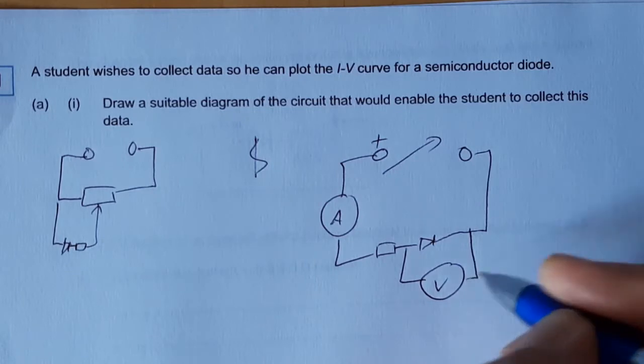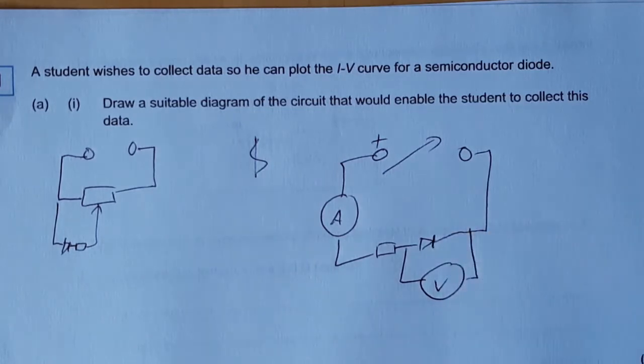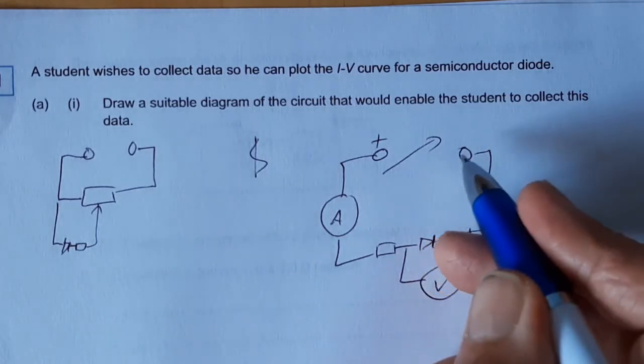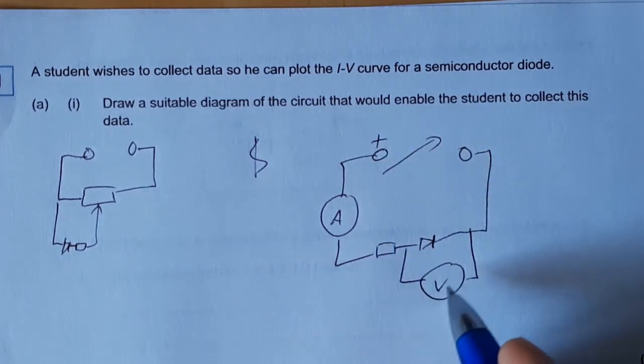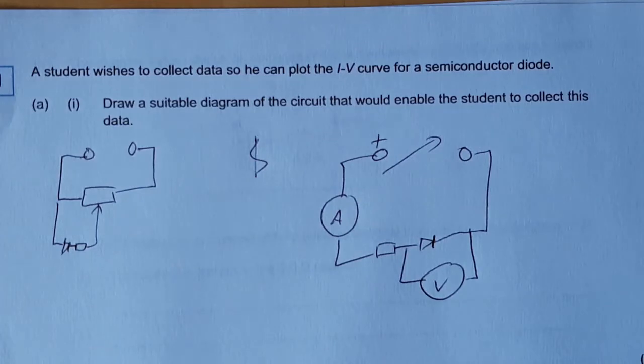There's our voltmeter. So we would then change the reading, change the amount of voltage, recording the voltage and the current. Need lots of readings because we're creating a curve. You need a lot more data to generate a curve than you do a straight line.